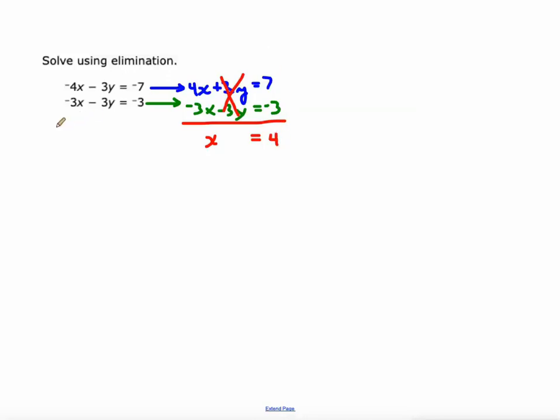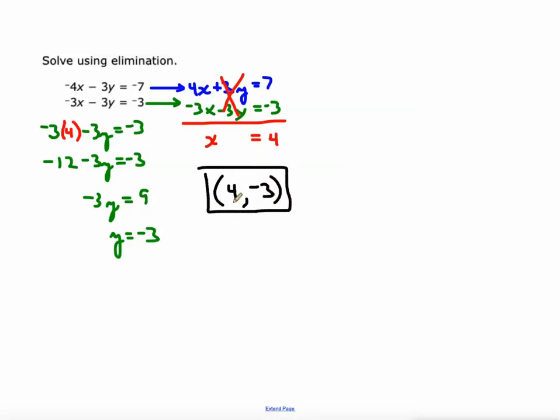I'm going to come back over here to this equation and replace x with 4. Then I'll solve this equation by first doing some multiplication, then adding 12 to both sides and dividing both sides by negative 3. 9 divided by negative 3 is negative 3. So x is 4 and y is negative 3. In the first example we found y first then x, and in this one we found x first then used the x value to find y.